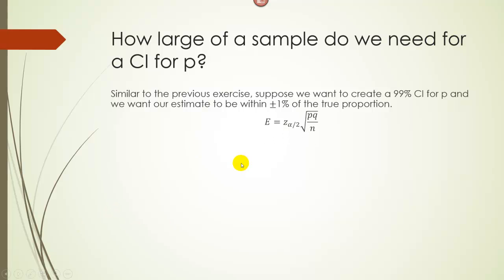Alright, let's walk through the derivation again. Looking at this formula, we have E = z times the square root of PQ over N. With square roots you can always separate them, so it's like the square root of PQ over the square root of N.